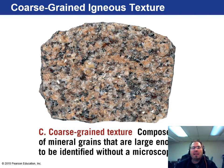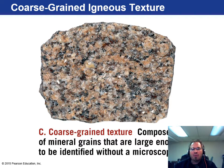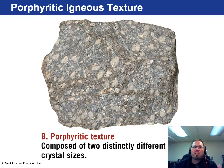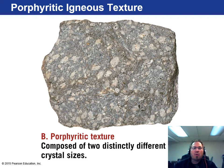The next is coarse grain igneous texture — something like granite. You can see the individual grains of the individual minerals without the aid of a microscope. That is granite. You can see the quartz crystals, the pinkish looking stuff is the feldspars, and then either hornblende or muscovite for the black mineral. Then you have porphyritic igneous texture, which is composed of two distinctly different sizes — large white blobs juxtaposed with much smaller ones. We call that porphyritic texture.